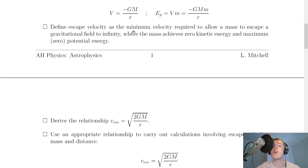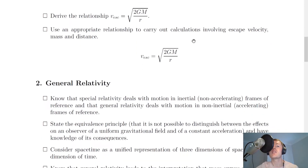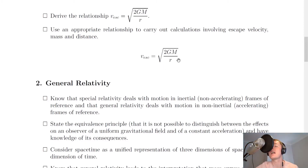You need to define escape velocity as the minimum velocity required to allow a mass to escape a gravitational field to infinity, where the mass achieves zero kinetic energy and zero potential energy. A key value is approximately 11.2 kilometres per second for an object escaping Earth's gravitational pull. You also need to derive the relationship: V escape equals the square root of 2GM over R, and be able to apply it to calculations involving escape velocity, mass and distance.